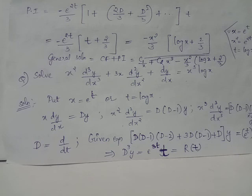Therefore, the general solution for the given Cauchy-Euler type differential equation is the sum of the complementary function and the particular integral, which is c1 over x plus c2 x cubed minus x squared over 3 multiplied by log x plus 2/3.